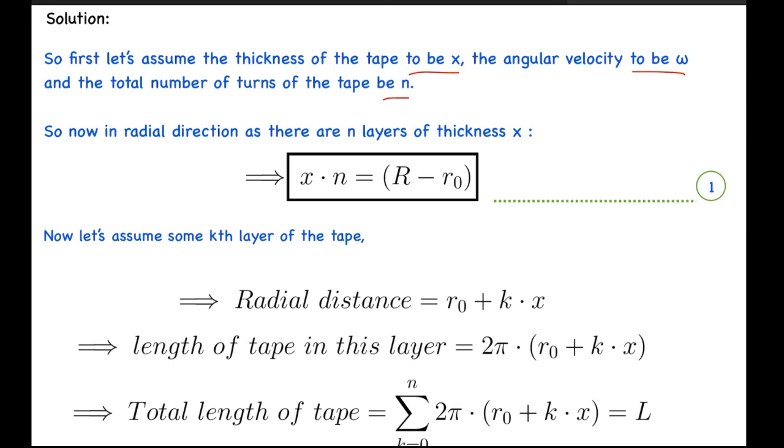Now what we can say is that the total thickness of the tape in radial direction, as there are n layers, will be x times n. And the total thickness can also be said to be outer radius minus inner radius of the spool, which will be R minus r0. So here we get our first equation from this relation.